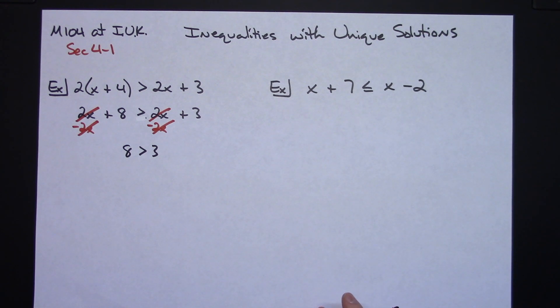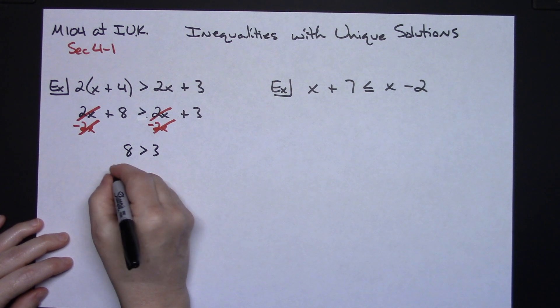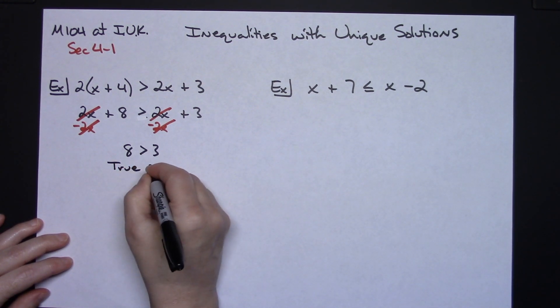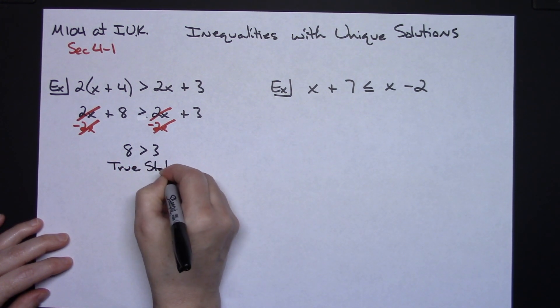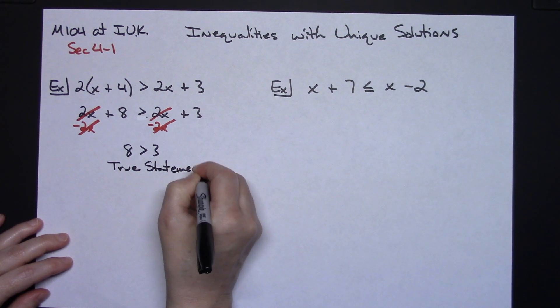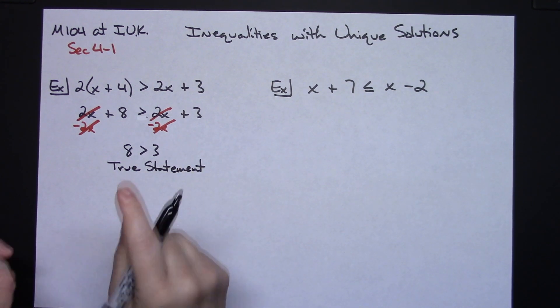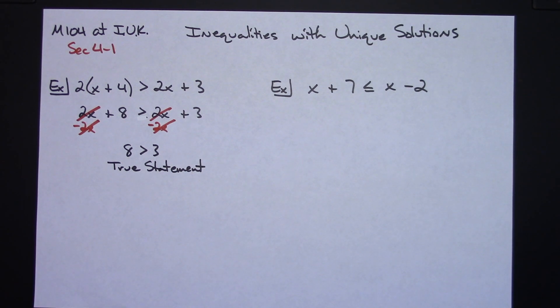I've got an 8 left on this side is greater than a 3 on this side. Now we can just look at that as a mathematical inequality: 8 is greater than 3. Yep, that's a true statement. So basically what that means is that it doesn't matter what number I plug in for x, it's always going to give me a true statement.